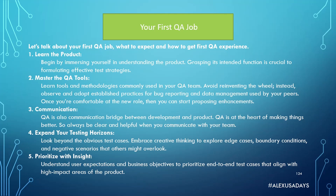Number three is communication. QA is also a communication bridge between development and product. QA is at the heart of making things better. So always be clear and helpful when you communicate with your team.